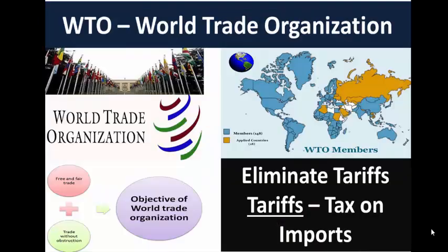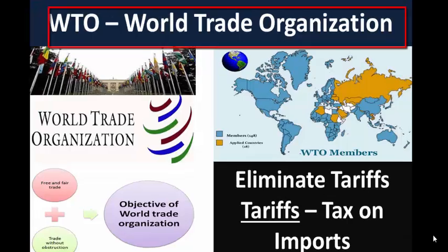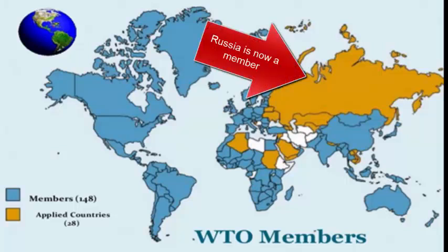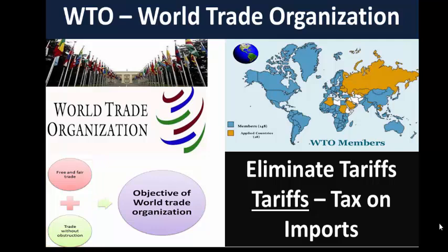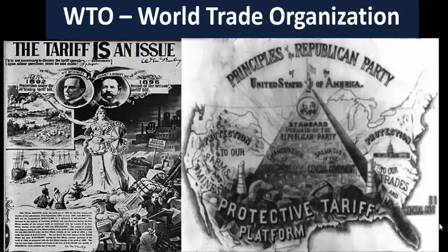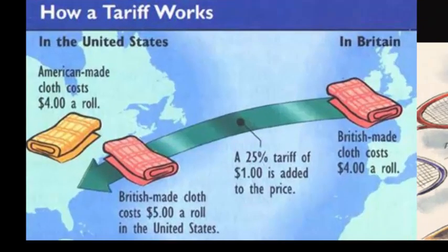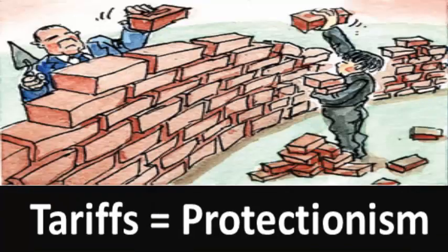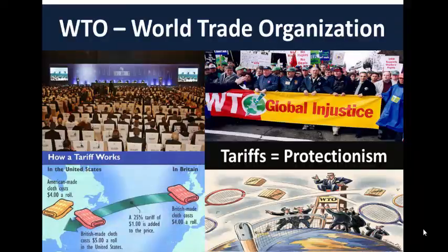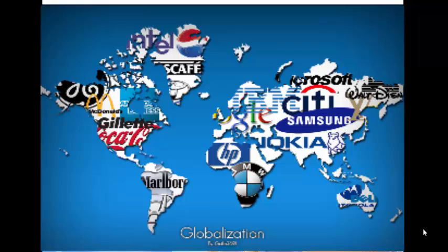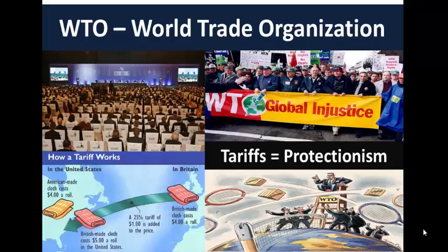Our next group is an economic association. The WTO, or World Trade Organization, is made up of 162 countries and was created with the goal of increasing free trade — meaning countries buy and sell goods from one another without placing taxes on imports. This brings up a key word you need to know: tariffs, which are taxes on imports. Tariffs were used for a long time to protect businesses inside a country — for example, a tax on British cloth would protect American cloth makers by making the British product more expensive. This is known as protectionism. Today we use the word globalization to describe how countries from all over the world trade with one another, which is what the WTO is all about.